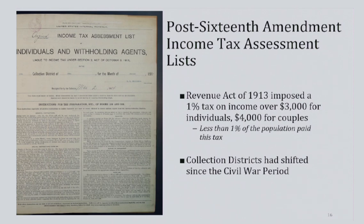NARA does also hold some assessment lists from the period of about 1914 to 1919, after the passing of the 16th Amendment. The Revenue Act of 1913 imposed just a 1% income tax on those who made over $3,000, or couples who made over $4,000 annually. This only impacted less than 1% of the population, far less than the Civil War tax had, and therefore our holdings for this period are far less significant as well. By this time, the collection districts had changed dramatically from what they looked like in the 1860s and 70s.